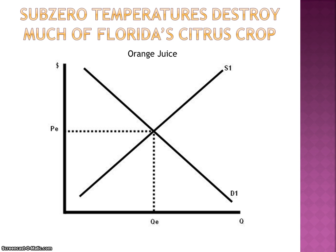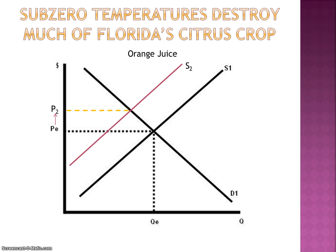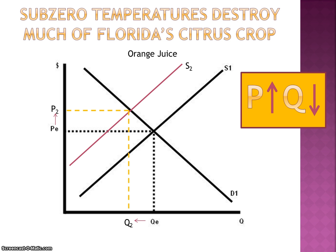Sub-zero temperatures destroy much of Florida's citrus crop — now we're looking at the market for orange juice. This is going to have an effect on the supply of orange juice because the citrus crop is used to make orange juice, so this is an input cost situation. Supply of orange juice will decrease because oranges are going to be more expensive, causing the price of orange juice to rise and the quantity available to decrease.